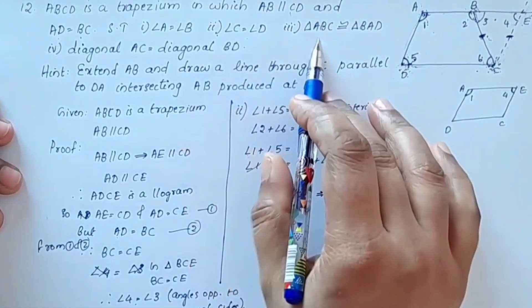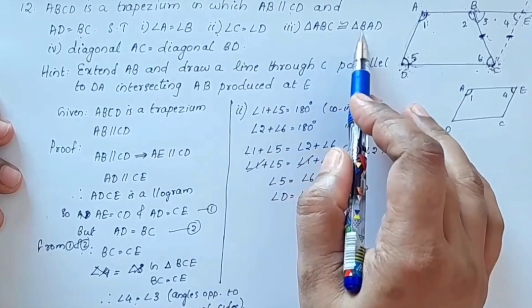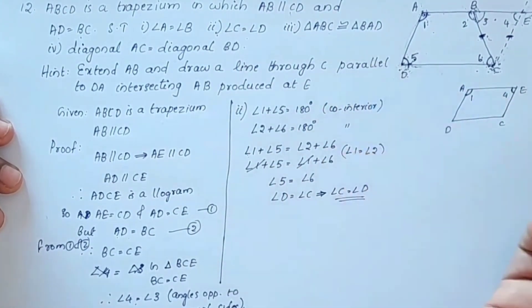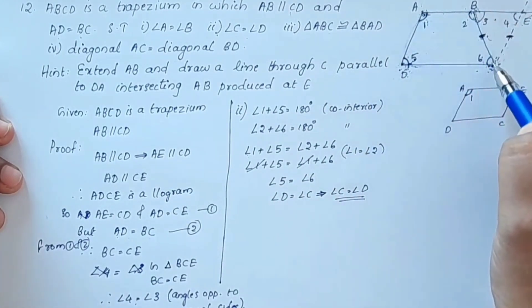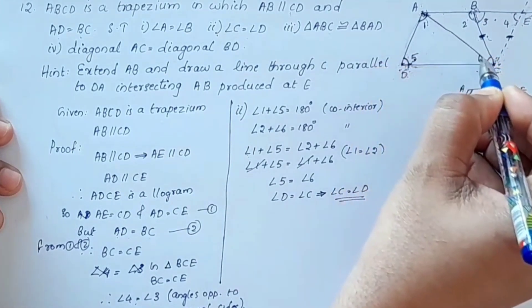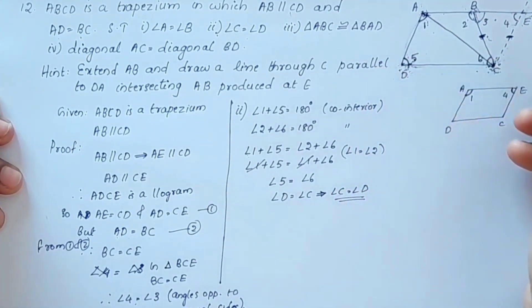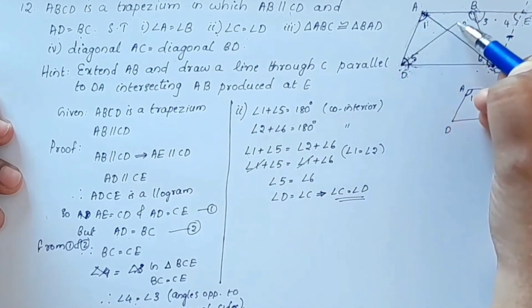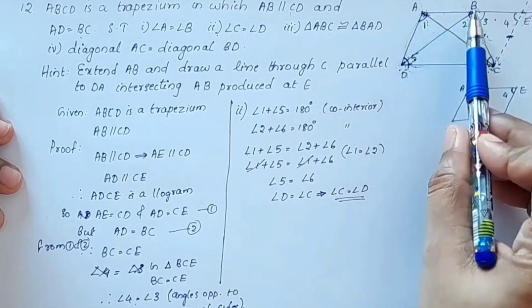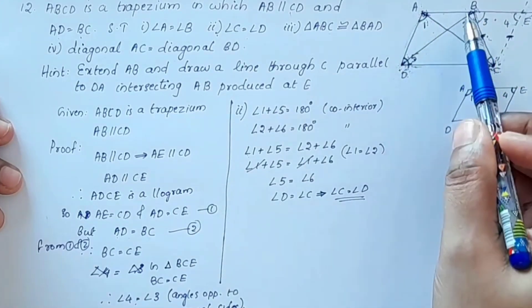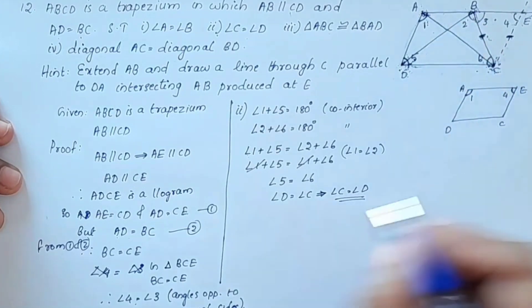Next, the third part: triangle ABC is congruent to triangle BAD. In triangles ABC and BAD, AB equals BA as the common side, and we have two triangles to prove congruent.